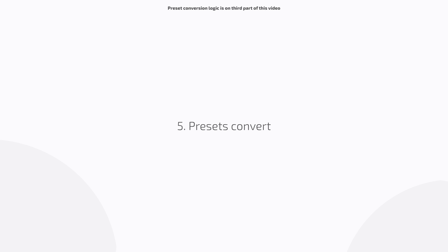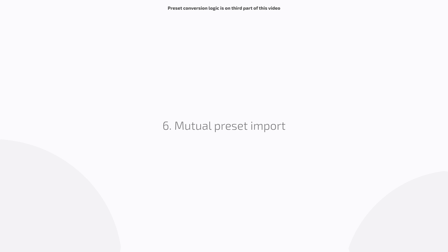The update supports importing and converting old presets from previous firmware into the new v2.0.0 firmware preset structure. It also supports mutual preset import between the new preset structure of Ampero 2 Stomp and Ampero 2 Stage presets.